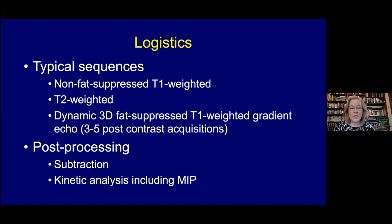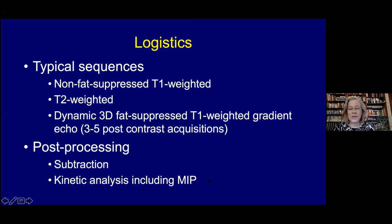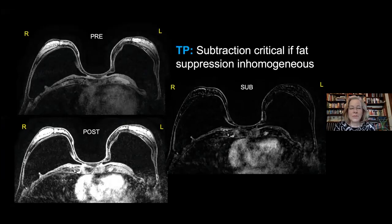Even though we use fat suppression, we often provide subtraction of the pre-contrast from the immediate post and usually the very delayed post-contrast sequence, and then look at kinetic analysis using a software algorithm which generates the maximum intensity projection. In Europe, they don't use fat suppression, so they rely solely on subtraction of pre and post-contrast images to assess what's enhancing.